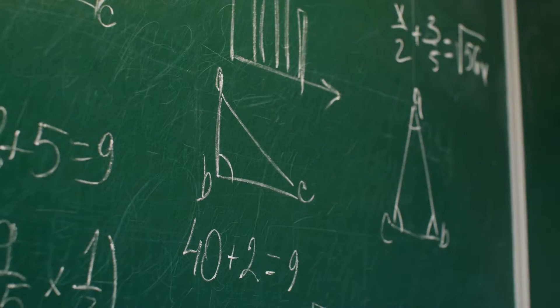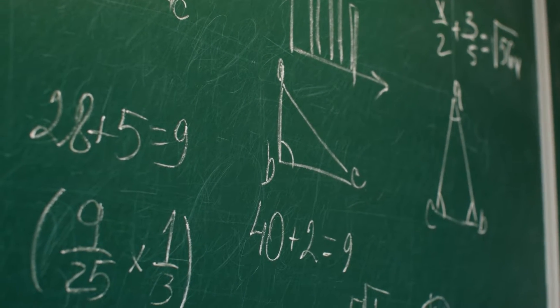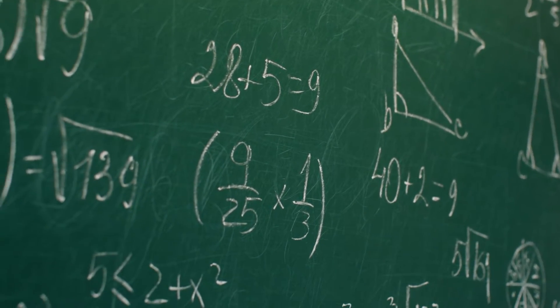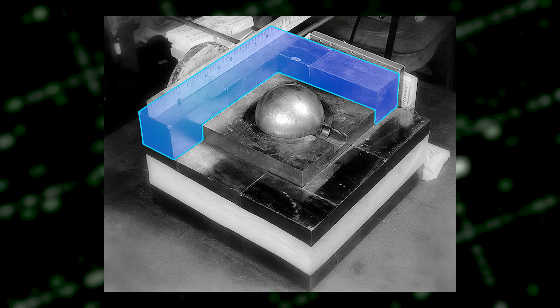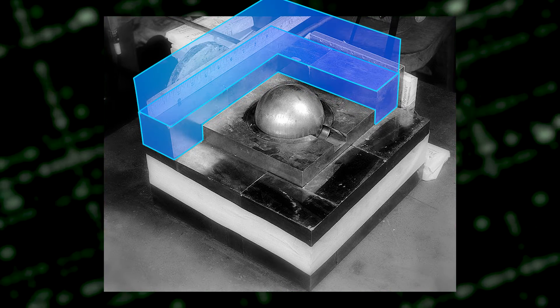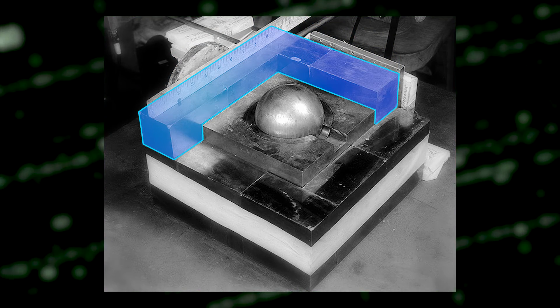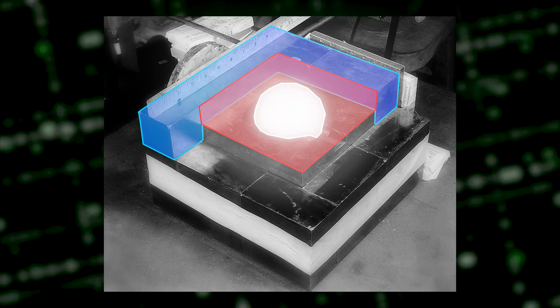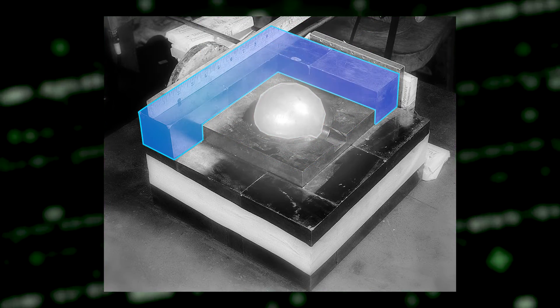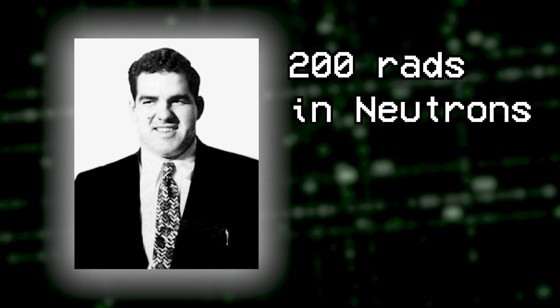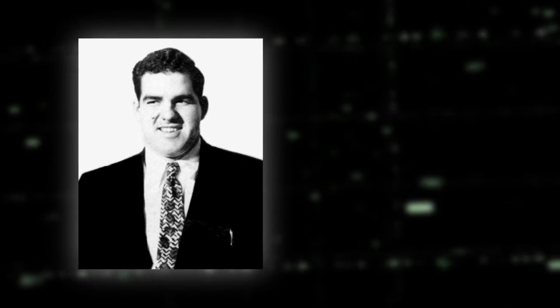They wanted to figure this out by bringing the core close to the critical point and, using advanced math and science, calculate the amount needed to cause supercriticality. But during this experiment, something went horribly wrong. A plutonium core was placed within a stack of neutron reflective bricks. Adding bricks would increase the amount of neutron reflection. But when Harry tried to stack another brick, he accidentally dropped it right onto the core, causing supercriticality. He quickly moved the brick, avoiding nuclear annihilation, but he received a deadly dose of radiation — around 200 rads in neutron radiation and 110 rads in gamma radiation. He died 25 days later due to acute radiation syndrome.